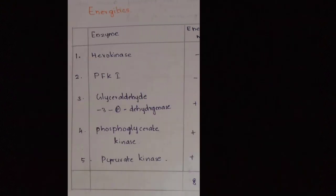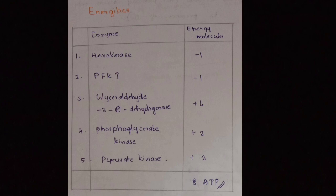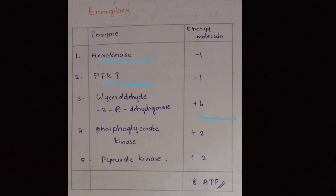Now the energetics of this reaction. One molecule of glucose yields two molecules of glyceraldehyde-3-phosphate, and both halves follow the same pathway in the second phase. Hexokinase and phosphofructokinase-1 each utilize one molecule of ATP, giving minus 2 ATP total. In the payoff phase, 2 NADH are released; since 1 NADH equals 3 ATP, that gives plus 6 ATP. Phosphoglycerate kinase and pyruvate kinase each produce 2 ATP, giving plus 4 ATP. The net yield calculates to 8 ATP from this pathway, which are utilized in the body for various metabolic purposes.